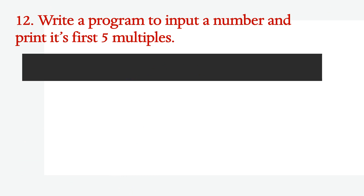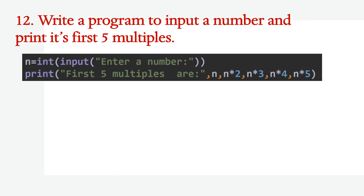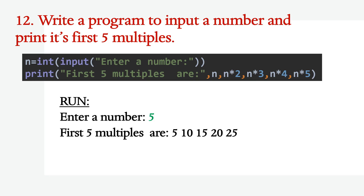Write a program to input a number and print its first 5 multiples. N is a variable storing the number entered by the user. It will print the first 5 multiples: n*1, n*2, n*3, n*4, n*5. For input 5, it prints 5, 10, 15, 20, and 25.